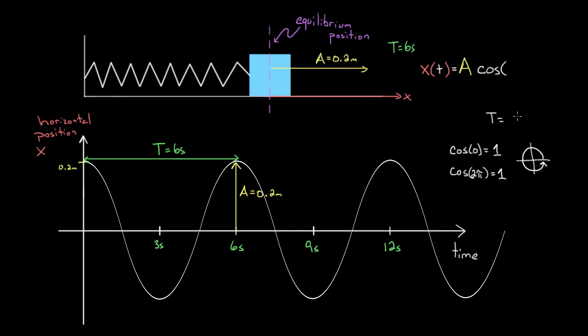We have to not just have T in here. We saw that if we just have T, the period is always two pi, because that's when cosine of T resets. So we're going to be clever and add a little variable—omega—and multiply that by T. Then I can tune this omega however I want.